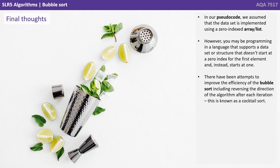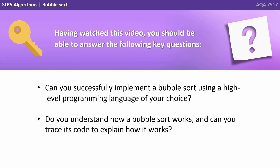In our pseudocode, we assume the data set is implemented using a zero-indexed array or list. However, you may be programming in a language that supports a data structure that starts at index one rather than zero. There have also been attempts to improve the efficiency of the bubble sort, including reversing the direction of the algorithm after each iteration — this variation is known as a cocktail sort. Having watched this video, you should be able to answer the following key questions: Can you successfully implement a bubble sort using a high-level programming language of your choice? Do you understand how a bubble sort works, and can you trace its code to explain how it works?